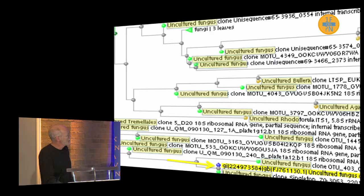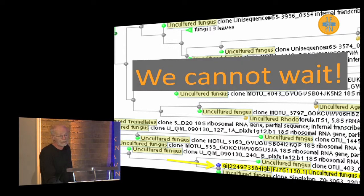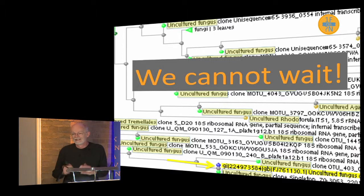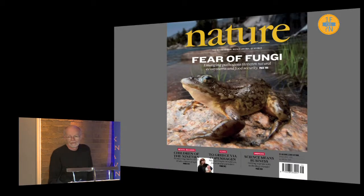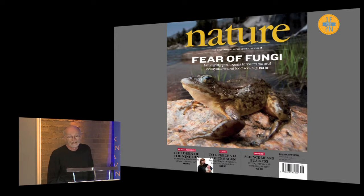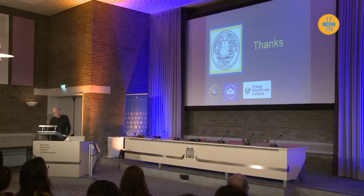Coming back to this slide of uncultured fungi: we cannot wait; we have to figure out what we're going to do. Taxonomy and nomenclature serve a much larger field — they serve ecology, and we've talked about different user groups. This week in Nature — in fact the cover of Nature — is an article on fear of fungi, about the unintentional transport of fungi from continent to continent and the ensuing disasters, including amphibians wiped out by Batrachochytrium. Much of that ecological work is generating the ENAS fungi. It's a big problem, and those concerned with nomenclature and taxonomy are the ones who will have to come up with a solution. Thank you very much.